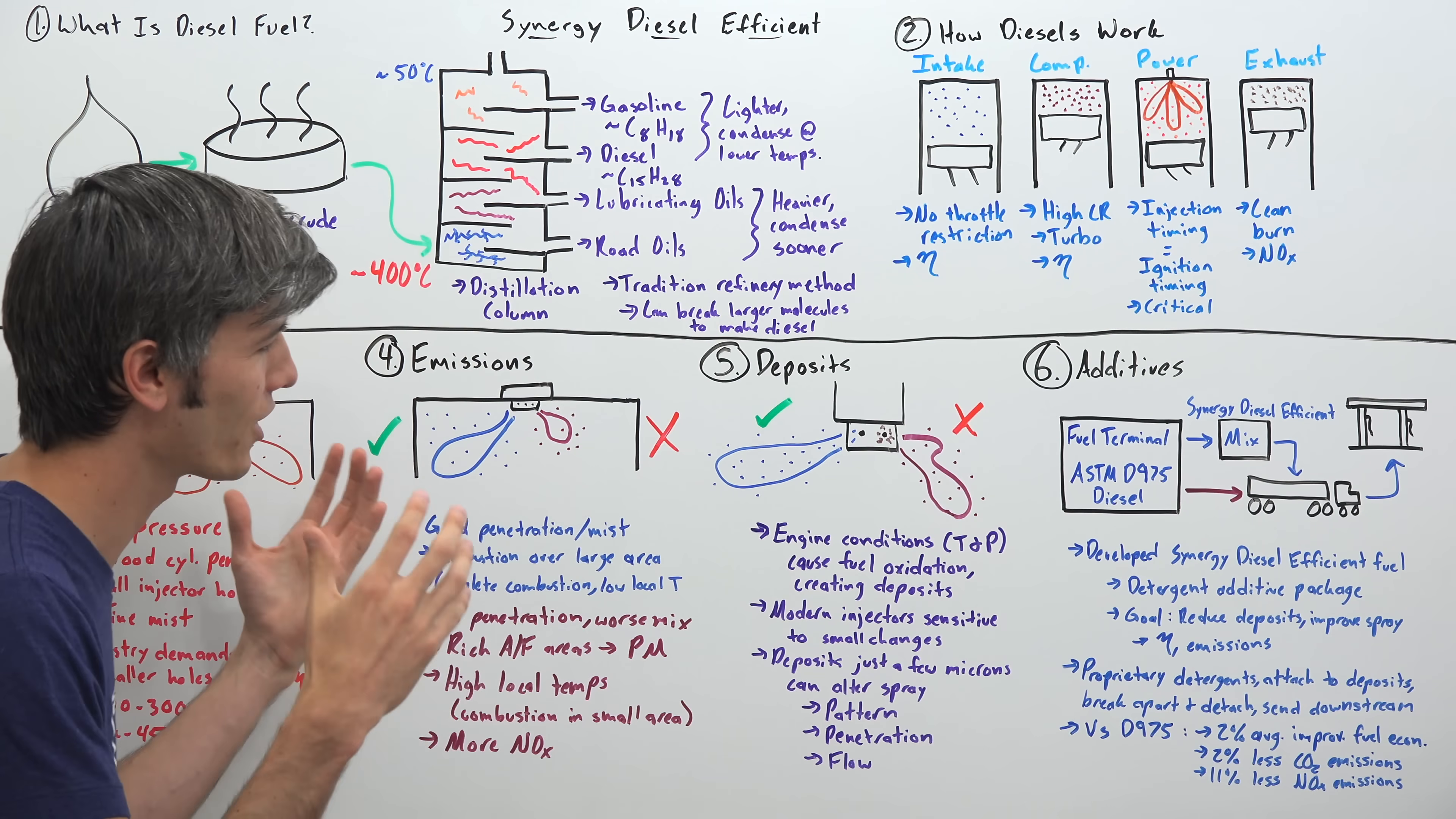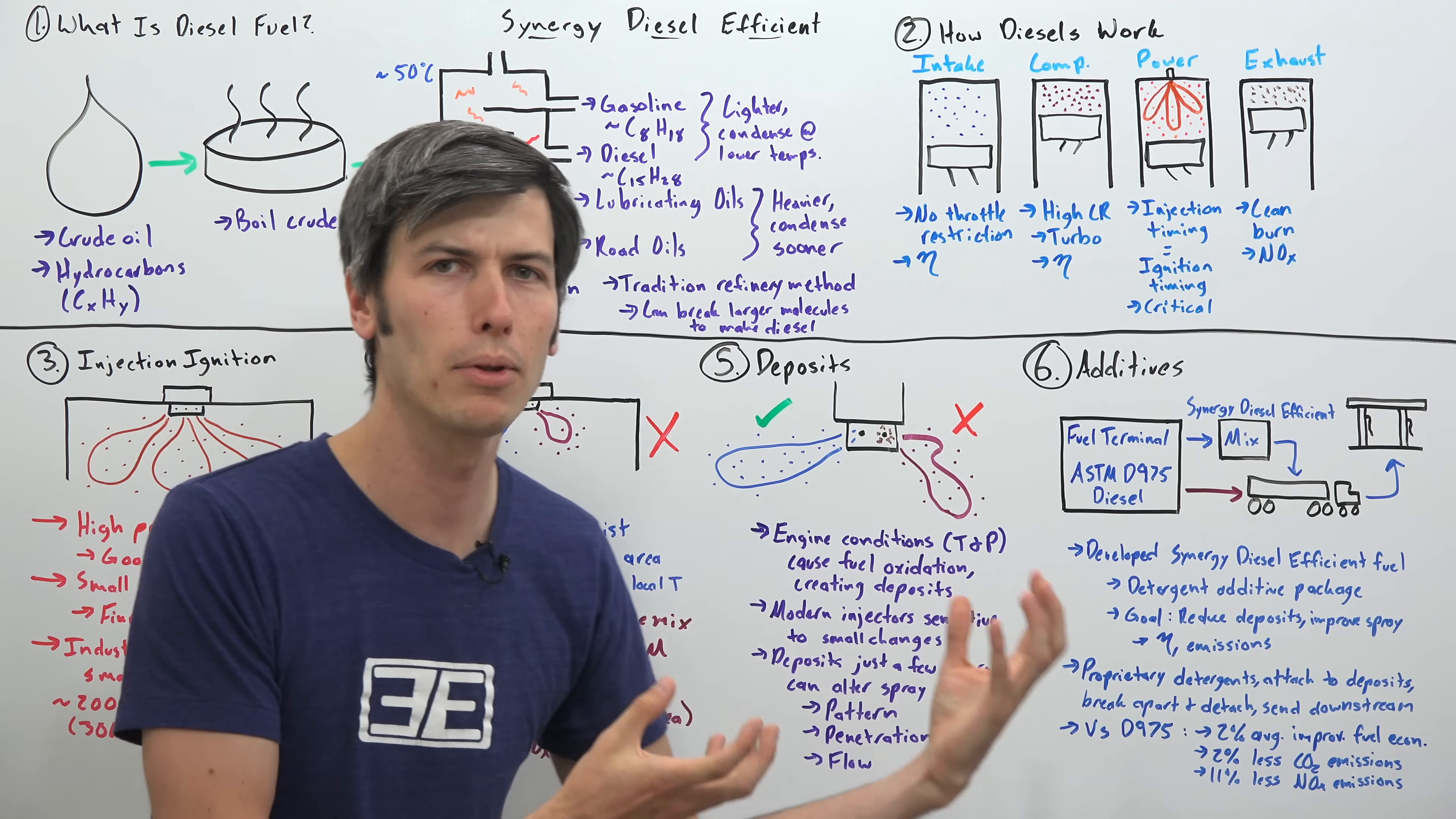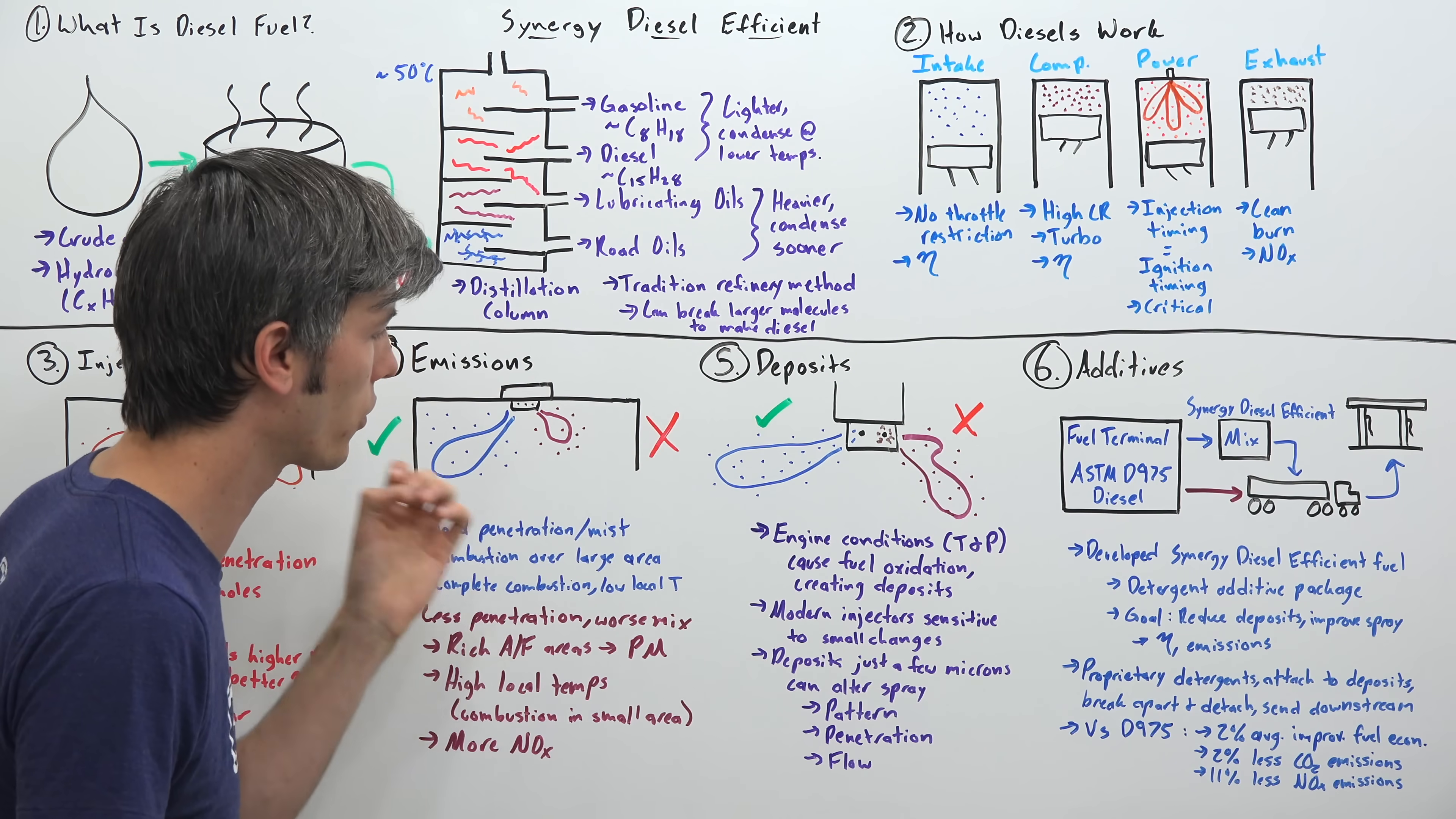Now here's where deposits come in and try to ruin everyone's day. So deposits in diesel engines is nothing new. It's the conditions that allow for that. So you have high temperatures and pressures, and this causes that fuel to oxidize, which creates deposits within the combustion chamber and around those fuel injectors. You can also have deposits form inside the nozzle, as the fuel undergoes heat and pressure changes as it's cycled through the fuel system. The problem is that as modern diesel engines move towards finer and finer mists, with very small holes on these injectors, then they become susceptible and very sensitive to irregular spray patterns as a result of those deposits.